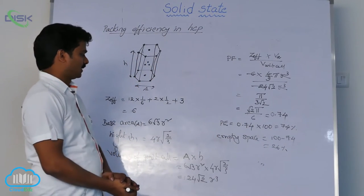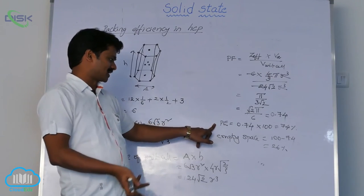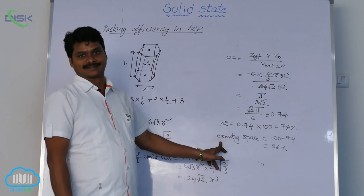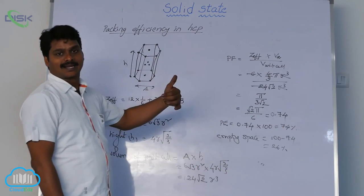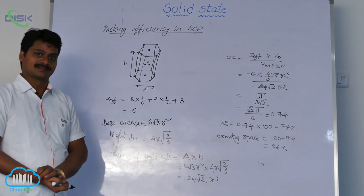So here also like in FCC, here also packing efficiency is 74 percent and empty space 26 percent. This is the calculation of packing efficiency in hexagonal close packing system.